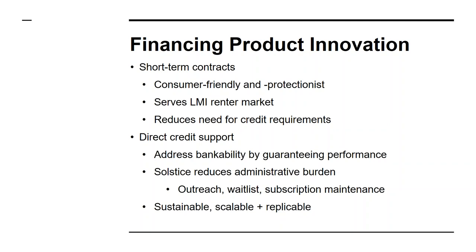Solstice would reduce administrative burden by doing all customer outreach and building a waitlist, so that if folks drop out — either at the end of a short-term contract or because the cancellation policy allows easier exit — there would automatically be a waitlist to draw from. In New York it's possible to replace subscribers monthly; in Massachusetts it's every six months. The greatest strength of this approach is that it's sustainable, scalable, and replicable — aiming to be self-sustaining, unlike approaches reliant on philanthropy or corporate opt-ins.